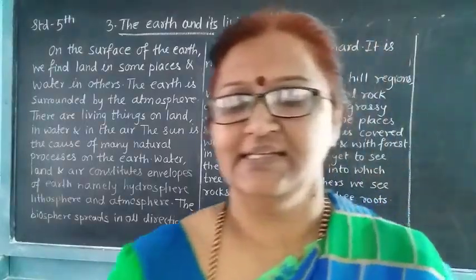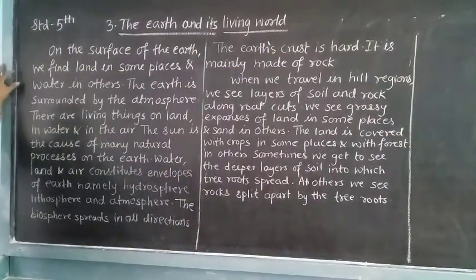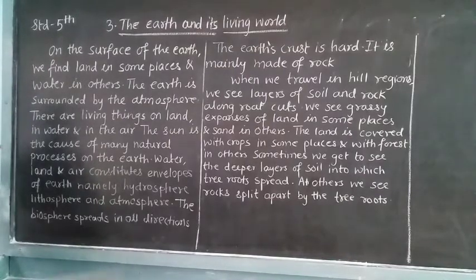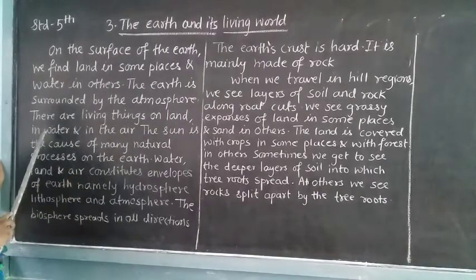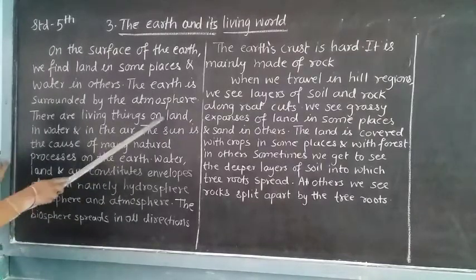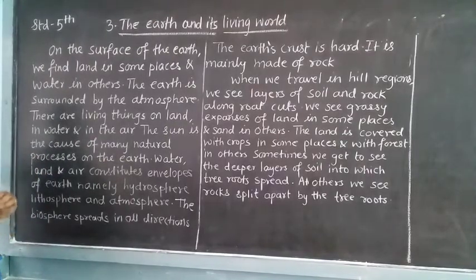Today we are going to see these in detail. On the surface of the earth, we find land in some places and water in others. The earth is surrounded by an atmosphere — that is, earth is surrounded by air. There are living things on land, in water, and in air. Living things are those which have life in them. The sun is the cause of many natural processes on the earth.